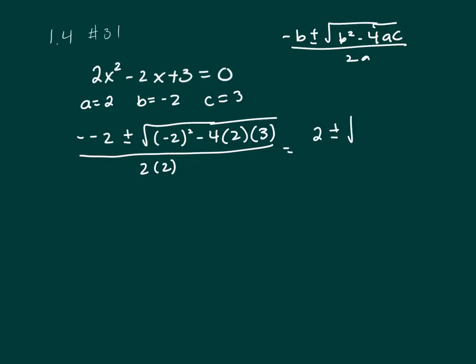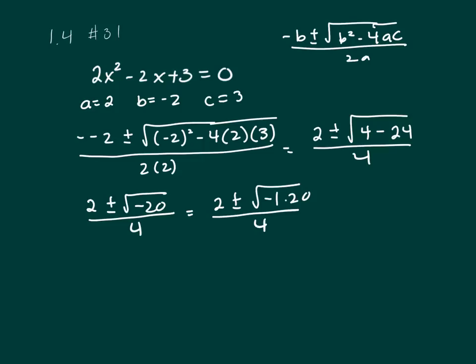So let's start to simplify. That's a positive 2 plus or minus the square root of 4 minus 4 times 2 times 3, which is 24. That gives us negative 20, so 2 plus or minus square root of negative 120, which is 2 plus or minus i times square root of 4 times 5, all over 4.